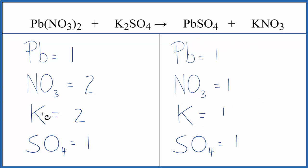Let's start by balancing the potassiums. So we have two here, and if we put a coefficient of two in front of the KNO3, one times two, that'll give us two.